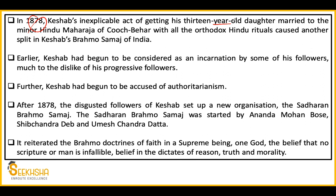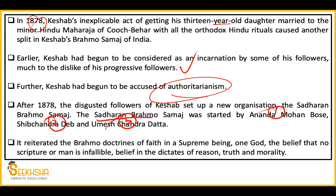Second issue: some of Keshav Chandra Sen's followers began saying he was an avatar of God, which went against the fundamental rationalist principles of Brahmo Samaj — the movement that promoted rationality and did not promote belief in incarnations. Progressive, rational followers objected. Third, Keshav Chandra Sen was accused of becoming authoritarian — not giving others opportunity. Even Debendranath Tagore had made him Acharya trusting him, but Keshav Chandra Sen always wanted to remain in authority. Due to all these reasons, his followers became completely disillusioned.